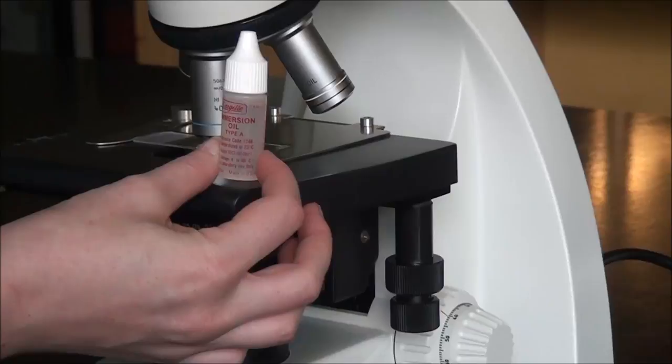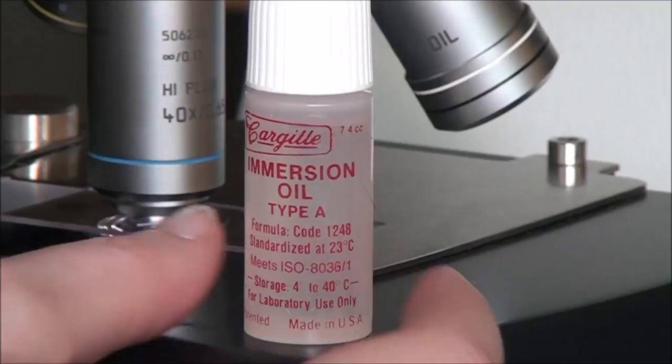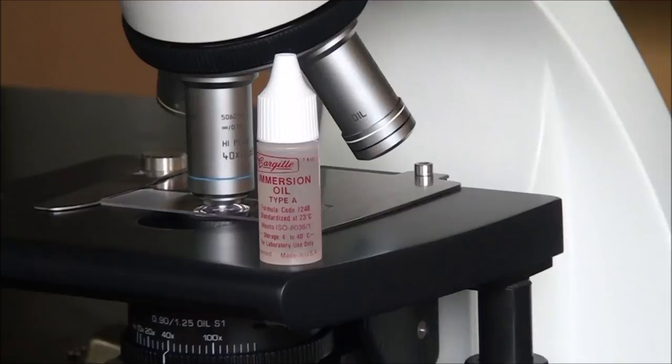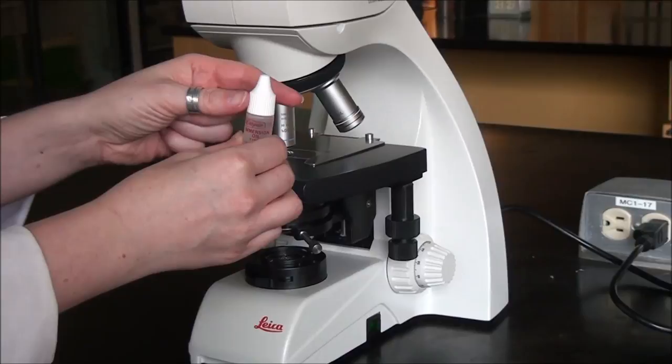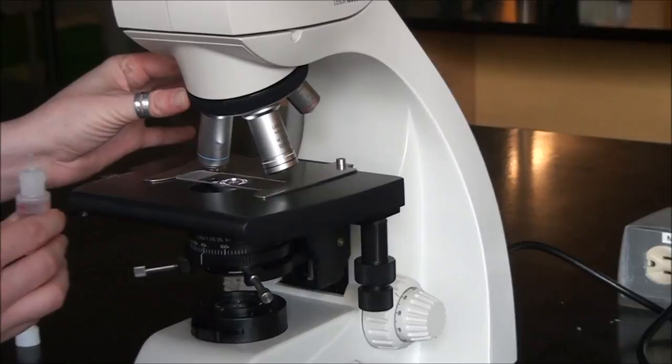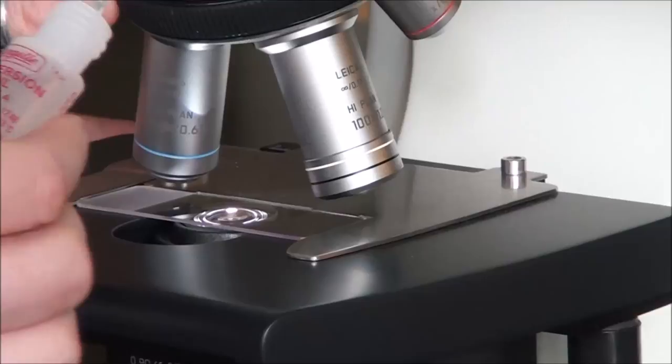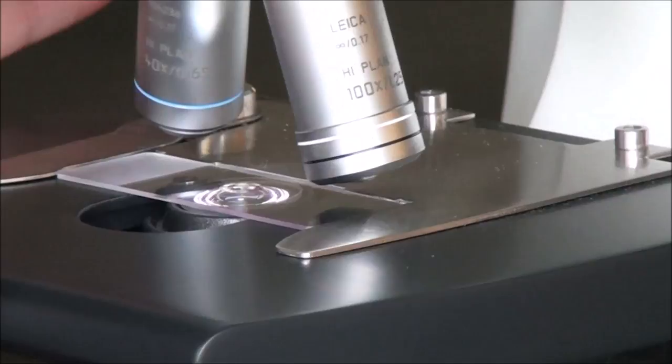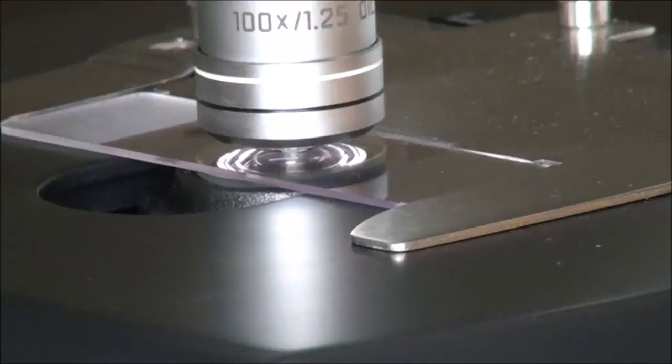Immersion oil is only ever used for the 100x objective lens. If oil gets on any other part of the microscope or any other lens that's not prepared for it, they're not sealed properly and the oil will wreck those lenses. To add the oil, which is necessary to reduce light refraction, I'm going to move the turret so that it is between the 40 and the 100 lens. Using our oil, you're going to add a single drop of oil over top of that bright little spot of light—just a drop is all you need. Then we are going to slide that 100x lens into place and it will contact the oil.